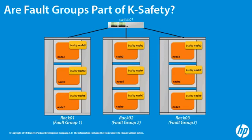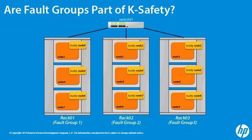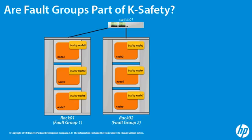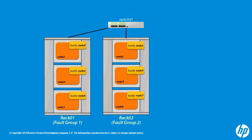Fault Groups provide extra-high availability above K-safety fault tolerance. Fault Group design ensures that rack-mate nodes are not buddy nodes by putting them in different Fault Groups. If an entire rack fails, the database stays up.